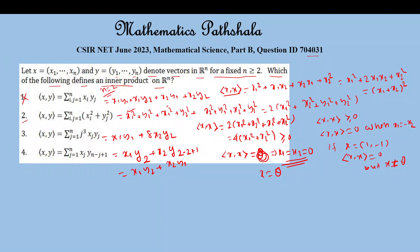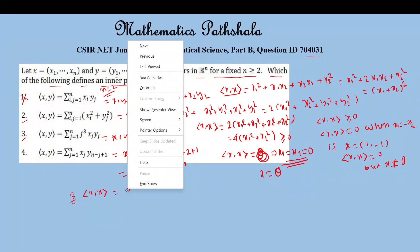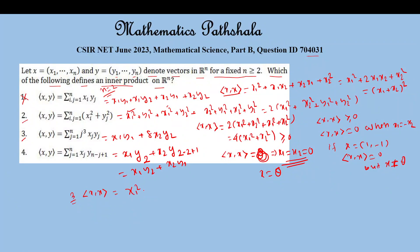For Option 3, the inner product of (x, x) equals x1² + 8x2², which is also greater than or equal to 0. If the inner product of (x, x) = 0, then x1 = x2 = 0, meaning x is the null vector. So positivity and definiteness are both satisfied for Option 3 as well.